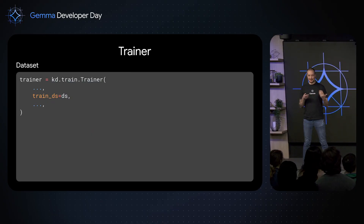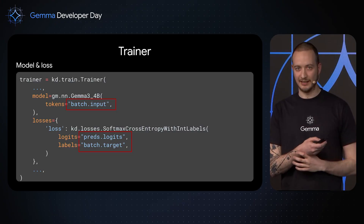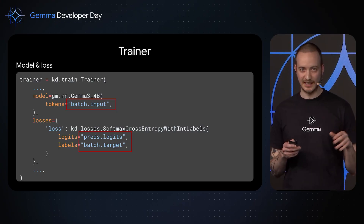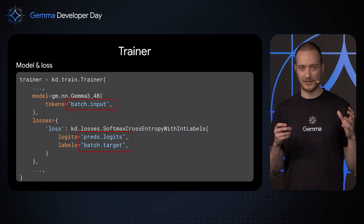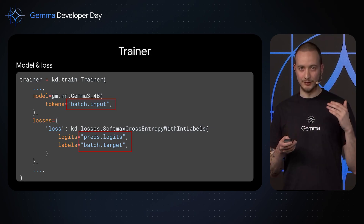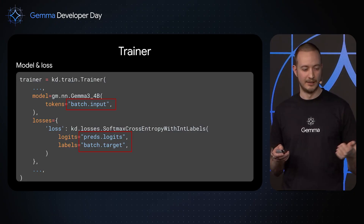You pass this dataset to your trainer and connect it to your model and loss using special string keys. This system is very flexible because we are not bound to any particular dataset structure. For example, if you want to switch to training on multi-modal data, you just need a dataset that returns images and add a single line of code to indicate the model should use those images. The rest of the training is completely identical and works out of the box.